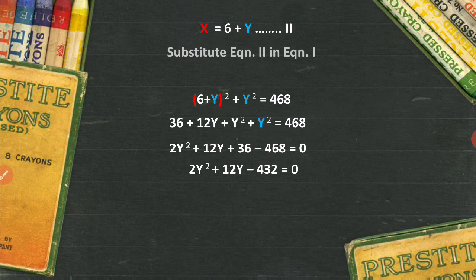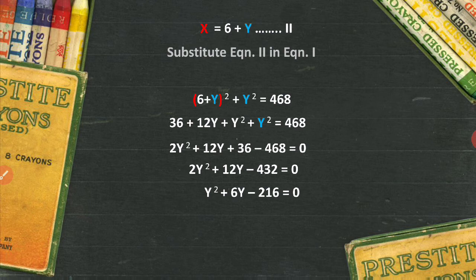And it would become y² plus 6y minus 216 = 0. Please ignore the sound of the rain. This is another additional noise that I'm going to get now henceforth in my upcoming videos, because initially it was the traffic, now it is the rain too. So kindly ignore that sound because I can't help it.